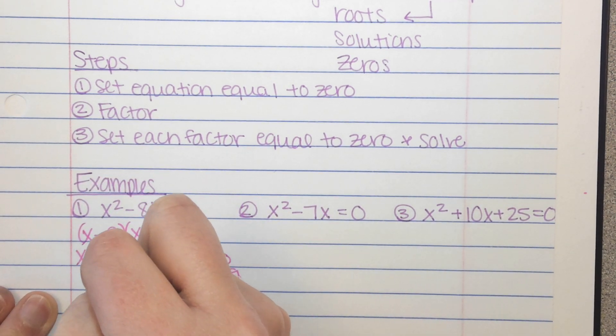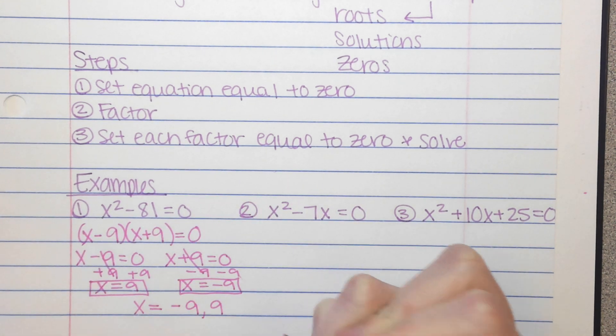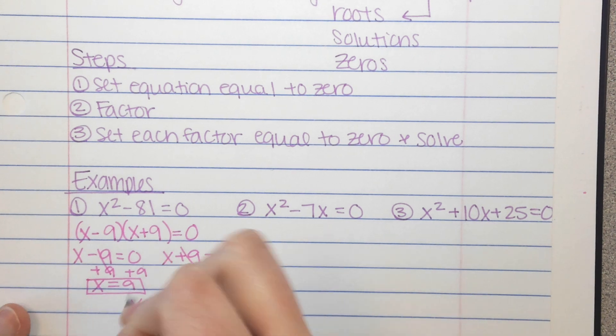So those are my two solutions. And in Math Excel, I think it's going to want you to write it like this. So you can do negative 9 comma 9, or 9 comma negative 9, like that.